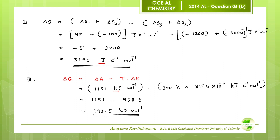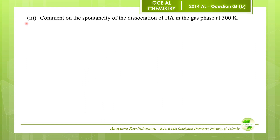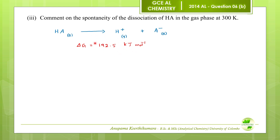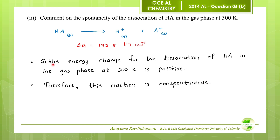This is the Gibbs free energy change for the gas phase dissociation. Question number three: comment on the spontaneity of the dissociation of HA in the gas phase at 300 Kelvin. The Gibbs energy change is 192.5 kJ/mol, which is a positive value. When delta G is positive, the reaction is non-spontaneous. Therefore, this reaction is non-spontaneous. This is the answer for question number three.